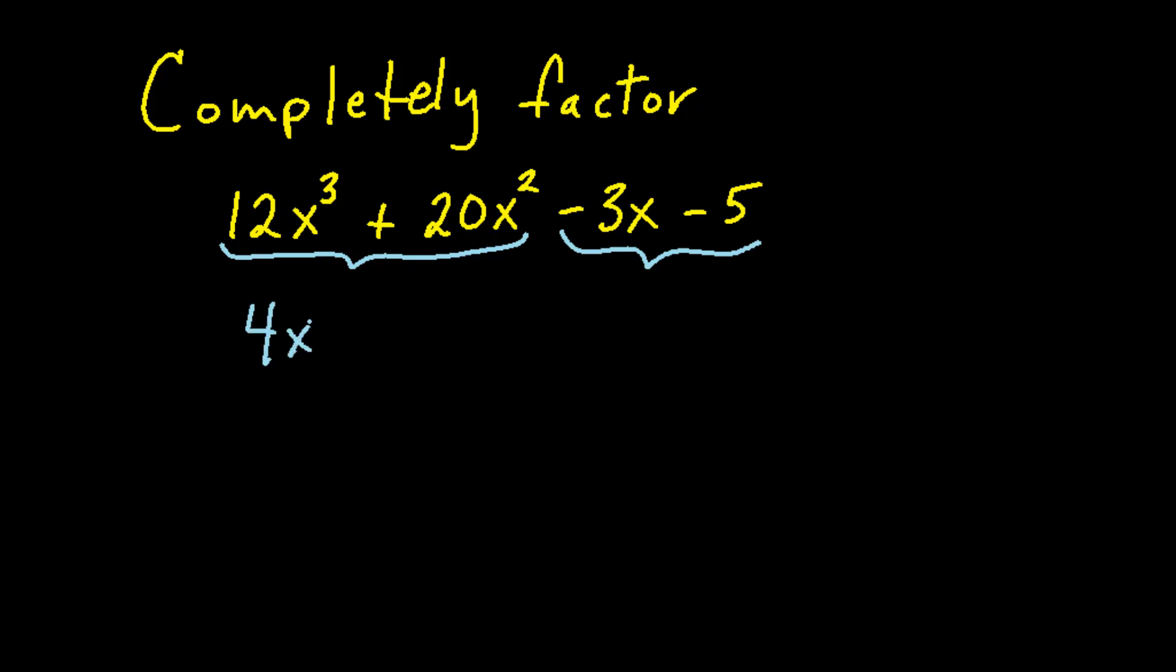4x squared is the greatest common factor of the first two terms, and 4x squared times 3x would give us 12x cubed, and 4x squared times 5 would give us 20x squared. So that's how we factor the first two terms. Whenever you have a negative on this third term, you will factor out a negative, and since there's no GCF between 3x and negative 5, we will just factor out a negative 1. 3x times negative 1 would give us the negative 3x, and positive 5 multiplied by negative 1 equals negative 5. So that's how we factor the last two terms.